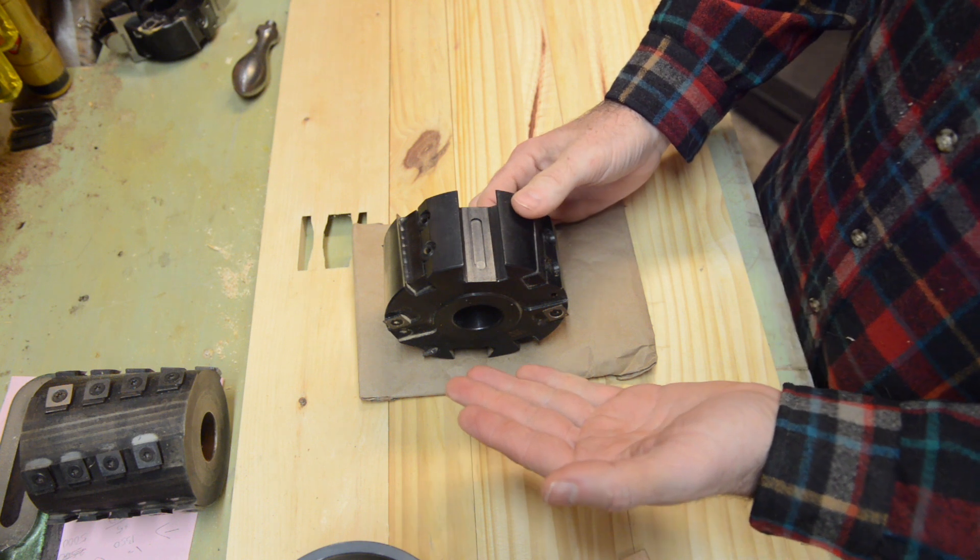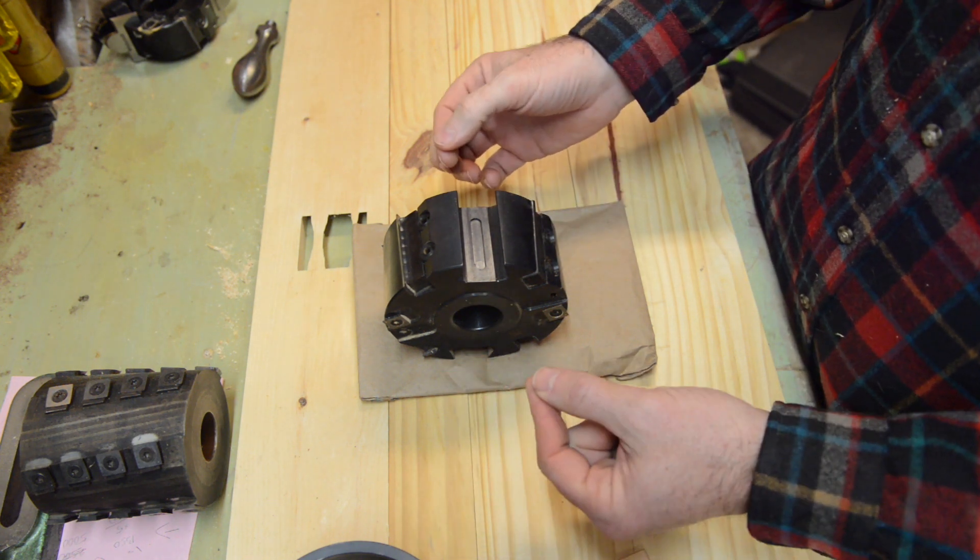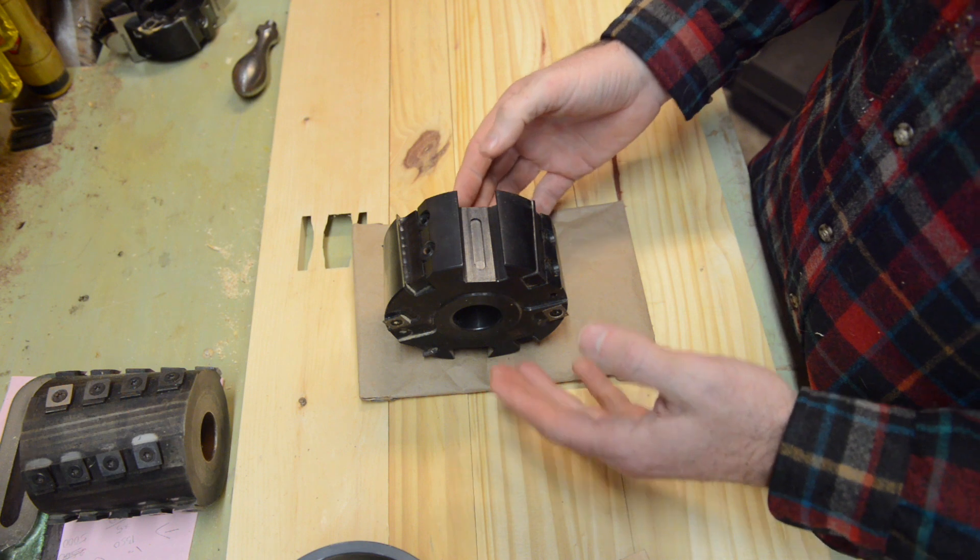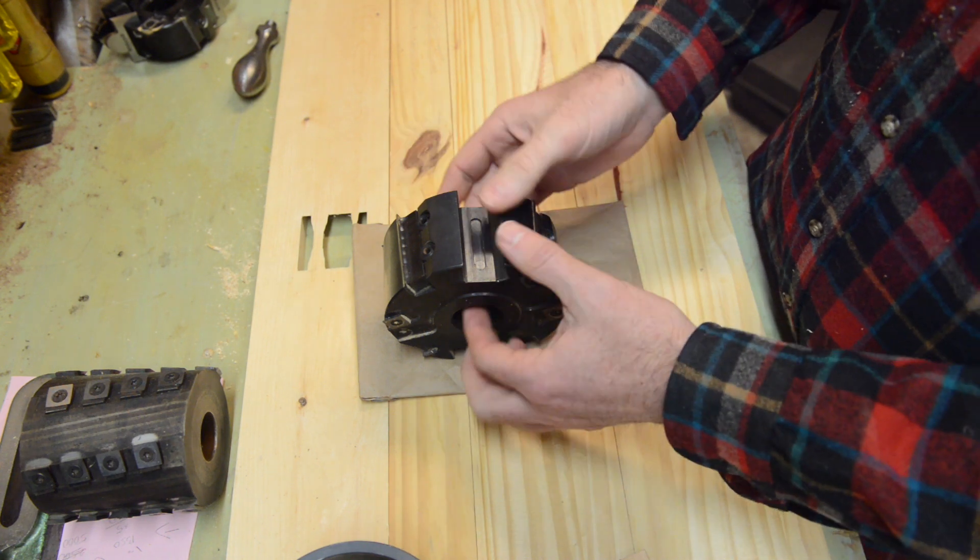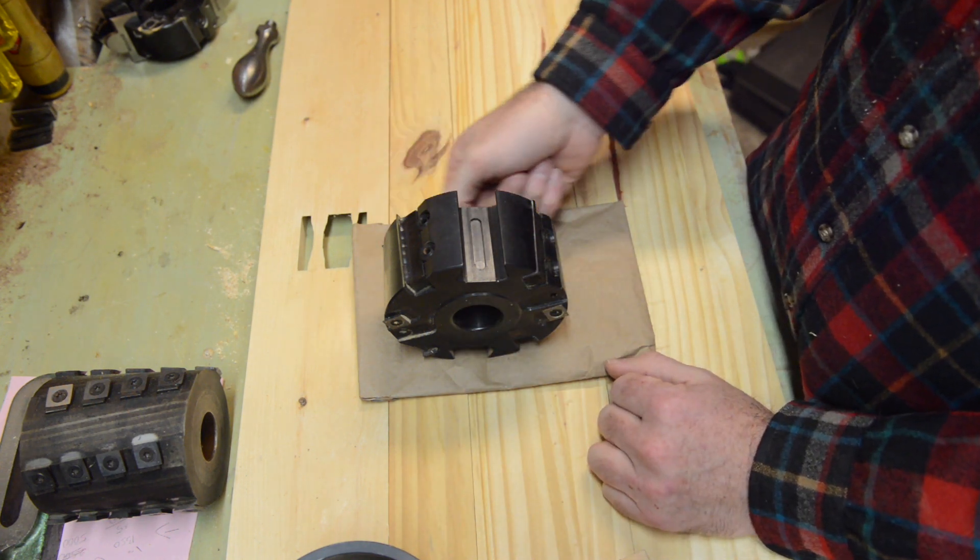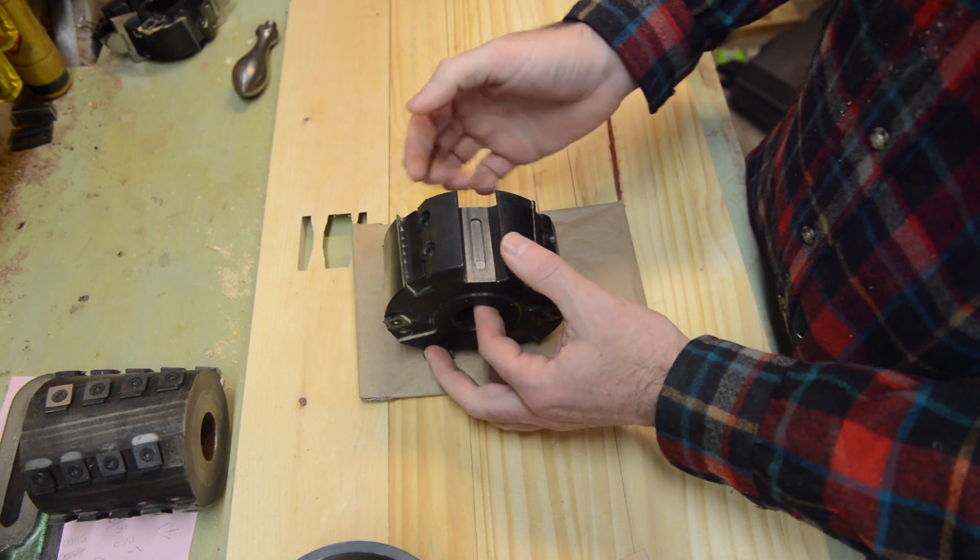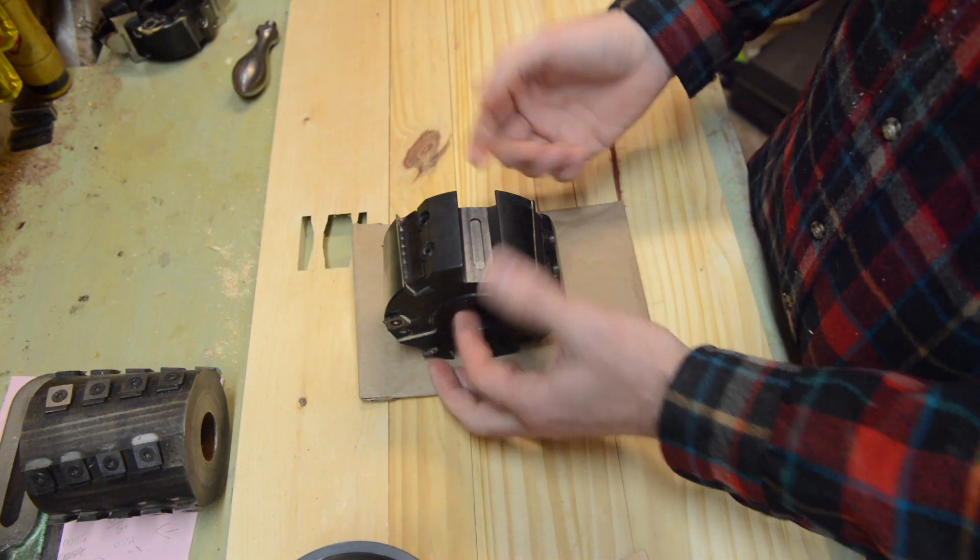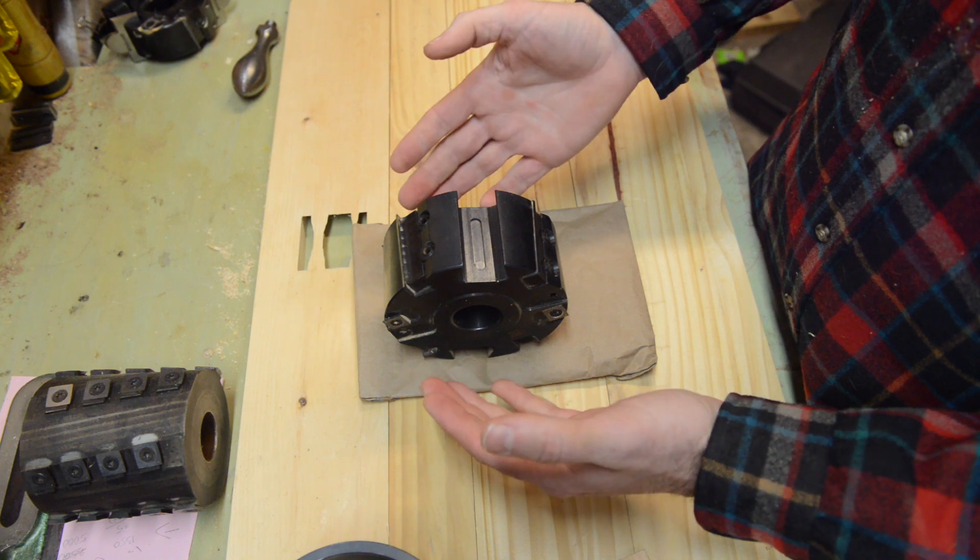Especially on jointers and planers, they started putting knives on a slight skew angle, and they're very common on shaper tooling as well. This, for example, is a Z4 shaper cutter, meaning there are four cutters around the cutting circle, and this is what they call a dual shear cutter.